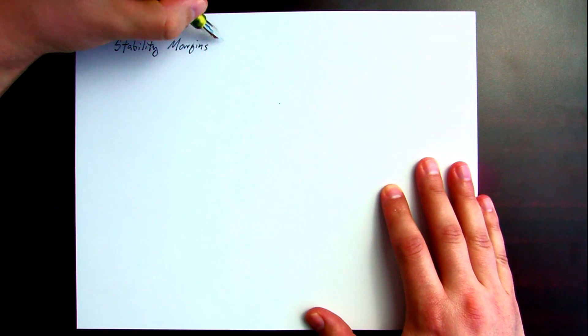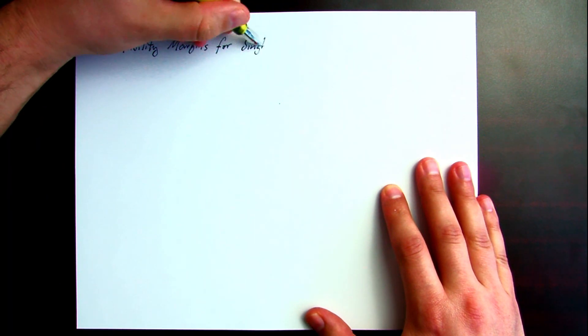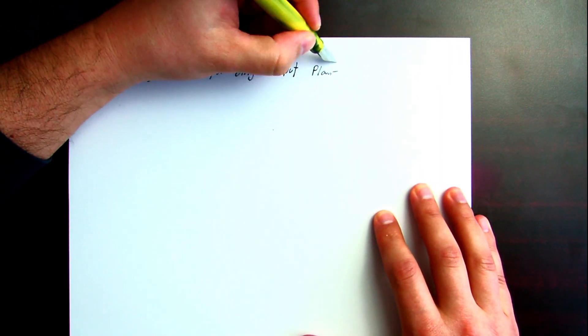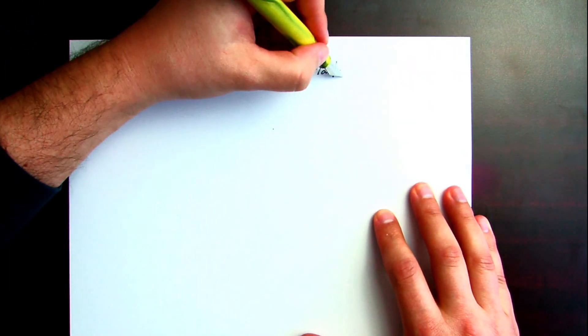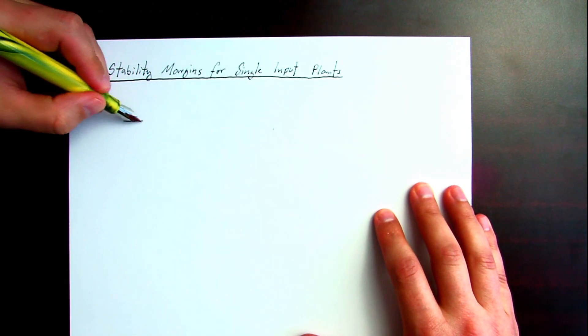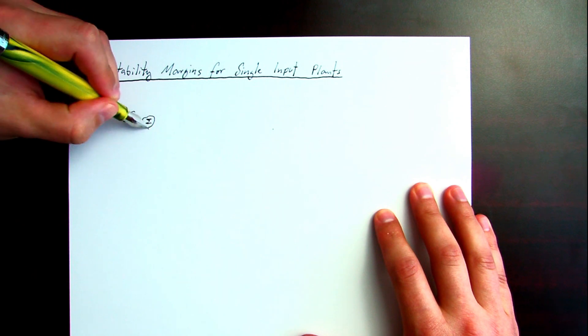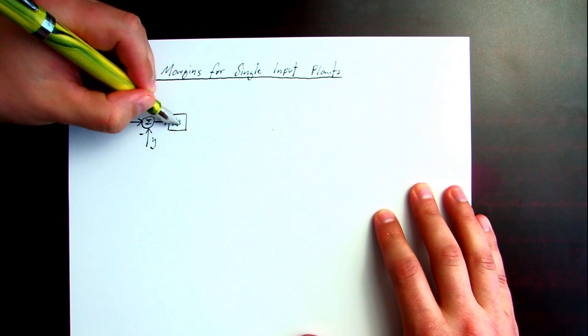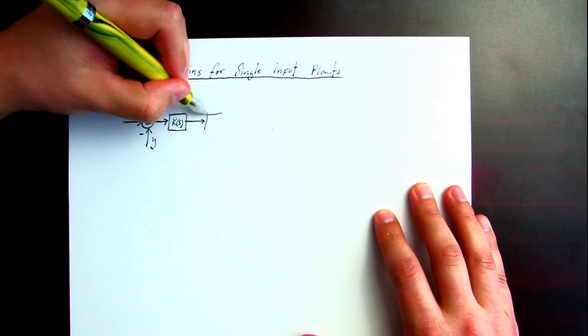Let's look at stability margins for single input plants. To get started, consider the feedback diagram controller.